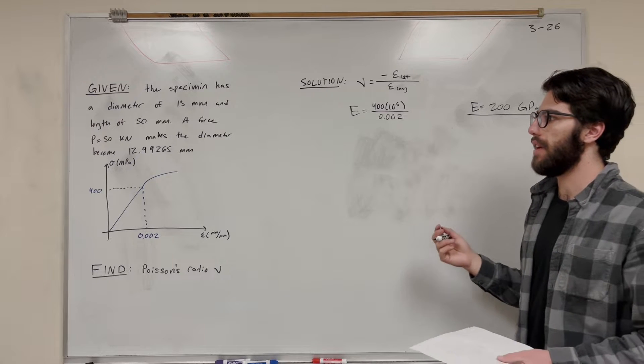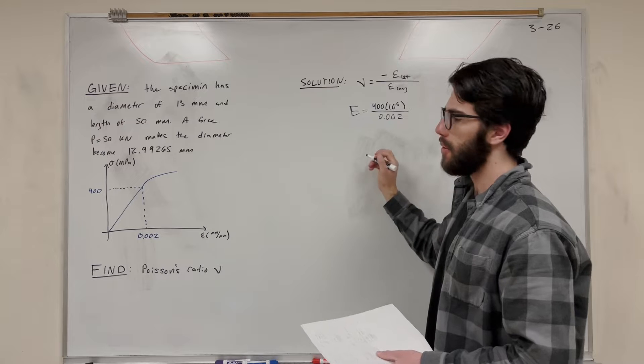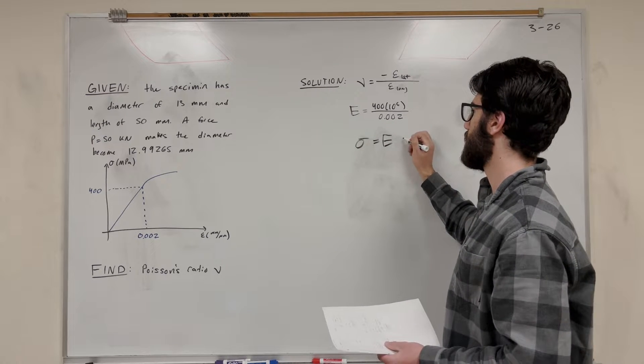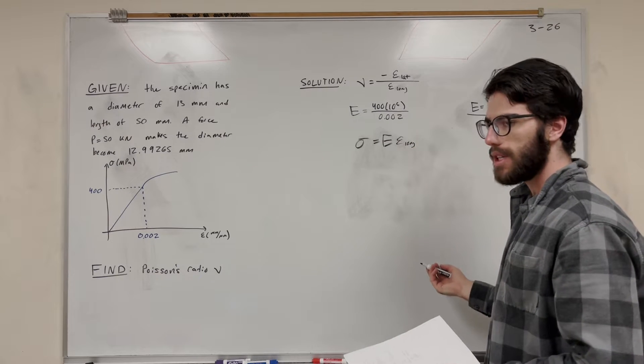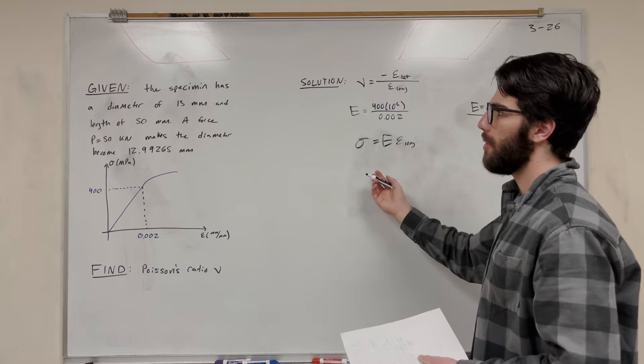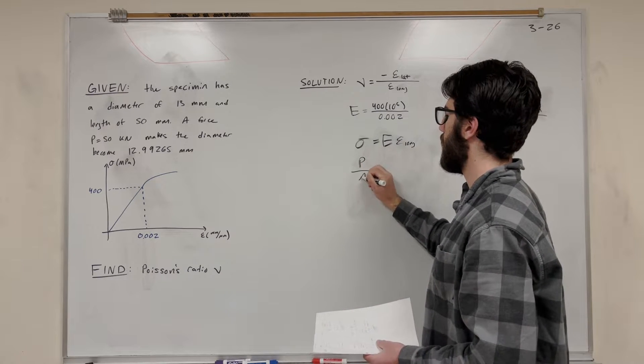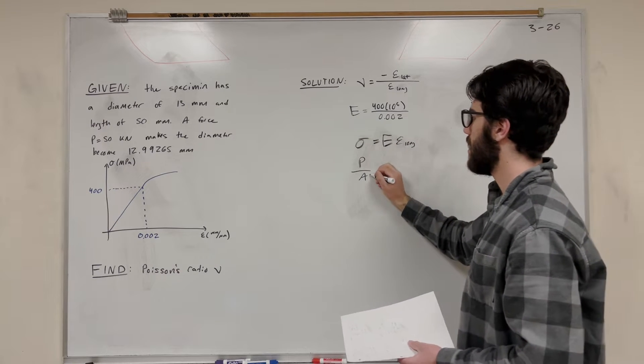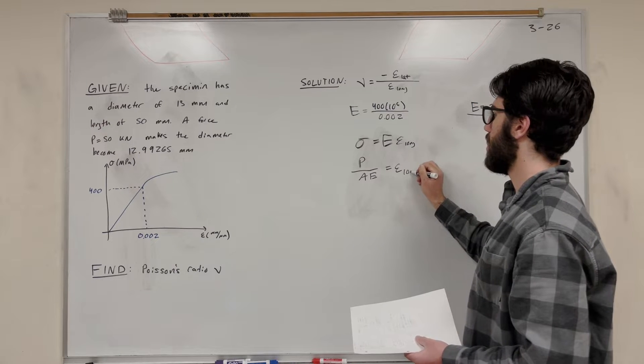Now we need to move on to the next part and find out what our strain is in the long direction. So we're going to use the equation stress is equal to the modulus of elasticity times strain. And we're looking in the long direction. So let's expand this. So stress, we don't know what stress is, but we know what the equation is. That's going to be force over area. And then we want to solve for strain. So let's divide by E.